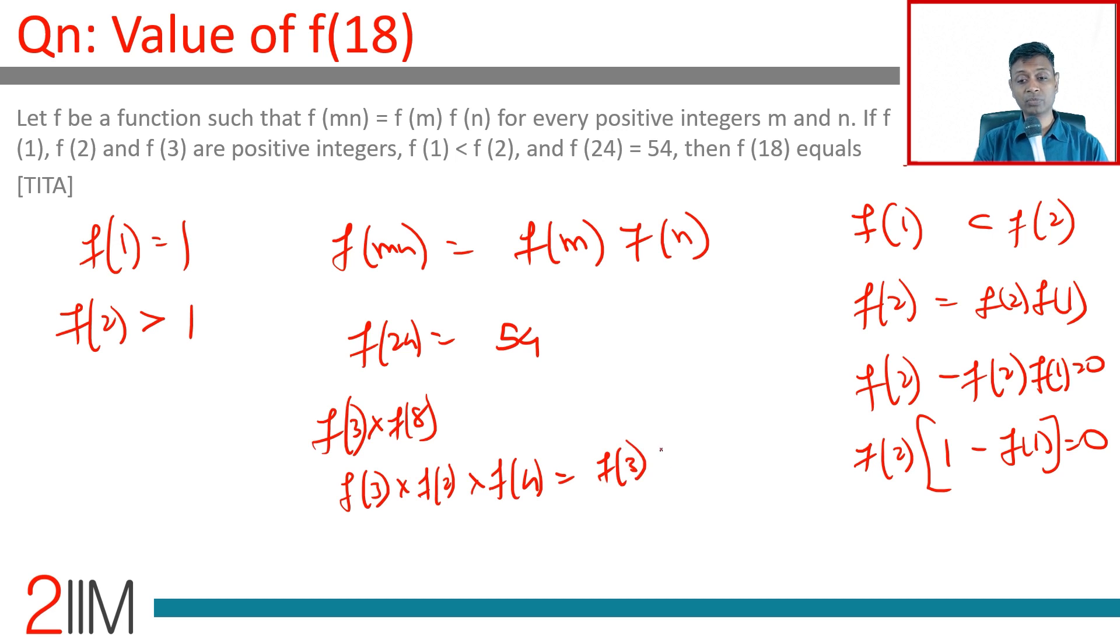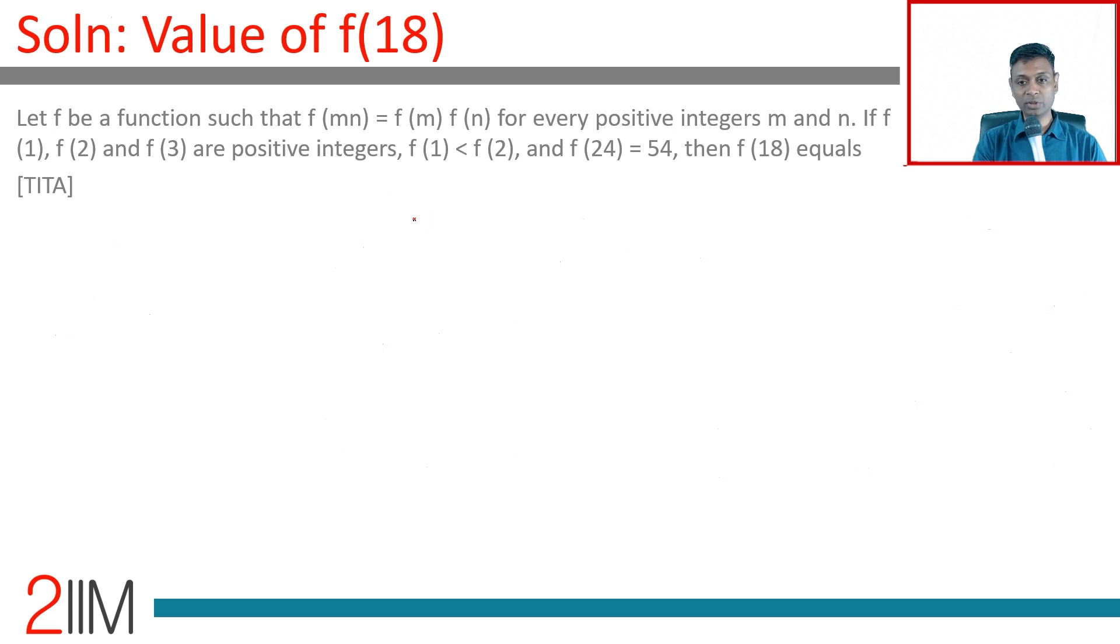This is f(3) into f(2) whole cube. This is 54. f(2) is a positive integer greater than 1. f(2) is 2 or f(2) is 3. 54 is 2 into 3 cube. Quite simply from this we know that f(2) is 3, f(3) is 2.